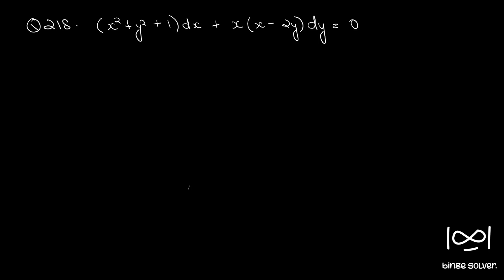Question number 218. The differential equation is: x² + y² + 1 dx + x(x − 2y) dy = 0.